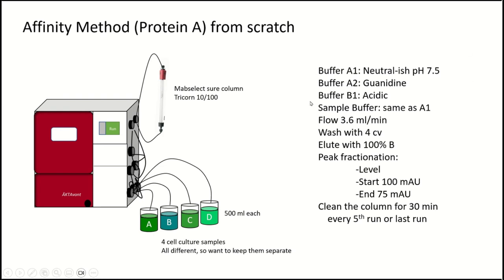We're going to run over a map select short column that's a trichorn 10, 100. We had three different buffers we're going to use. We're going to be using the sample pump to load them all. So some of the sample lines were going to be in the running buffer, the neutralish pH 7.5 buffer. We had some other specifications at least for the method.